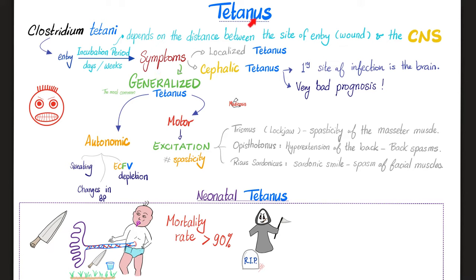There are three types of tetanus. First, localized tetanus, causing localized symptoms at or around the site of entry — just muscle spasms around that area. Second, cephalic tetanus, where the primary infection site is in the brain — this has a very bad prognosis and is rapidly fatal. Third, and most common, is generalized tetanus, with symptoms all over the body: motor symptoms and sometimes even autonomic symptoms, because GABA is present in both the motor and autonomic nervous systems.